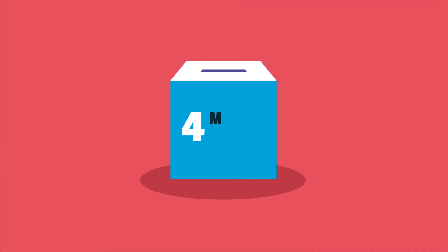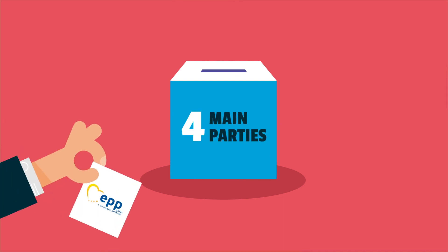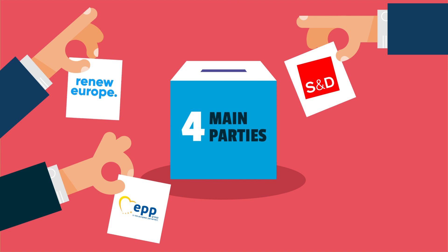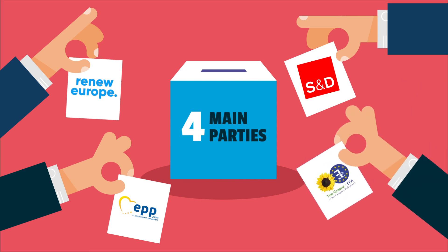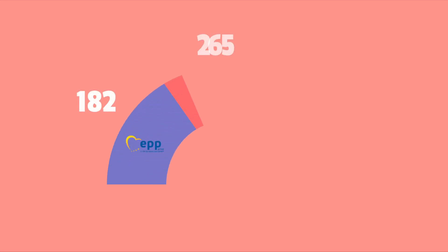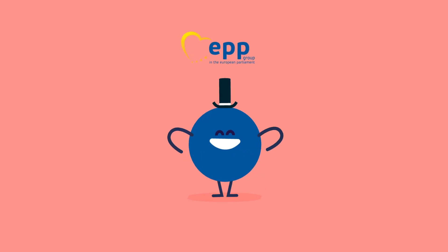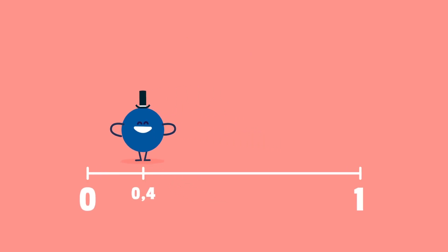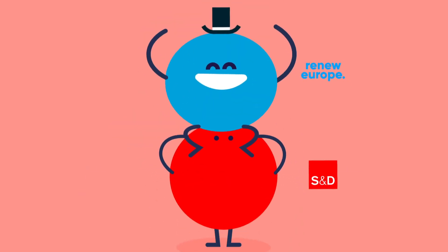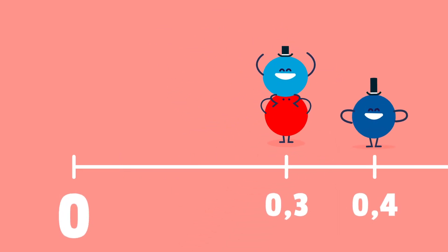To simplify, let's consider the four main parties only – EPP, S&D, Renew Europe and Greens EFA. Out of the 518 seats, EPP has 182, S&D 154, Renew Europe 108 and Greens 74. In case an initiative requires at least 50% of the seats, EPP has the biggest Shapley-Shubik index value. S&D and Renew Europe have the same index but slightly lower. At the bottom, the Greens EFA have a Shapley-Shubik index equal to zero.